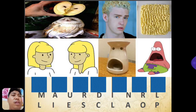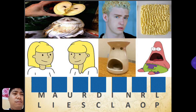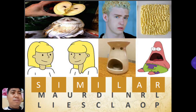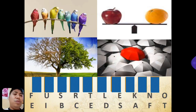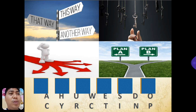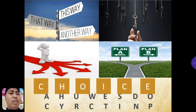Let's start with this set of pictures. Can you spot the differences? What are they — different or similar? That's right, they are similar. So the word is similar. How about this one? The opposite of similar is different. So the word is difference. How about this one? Are you going to plan A or plan B — this way, another way, or that way? So the word is choice.